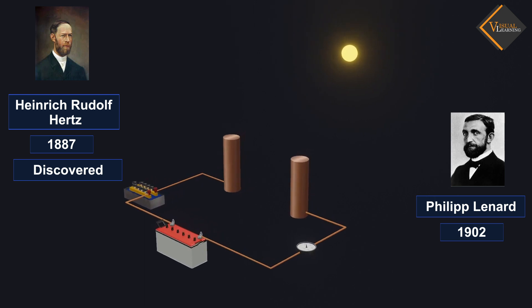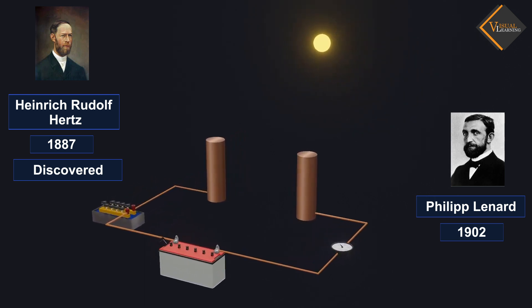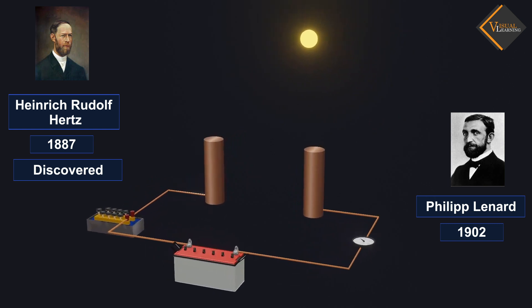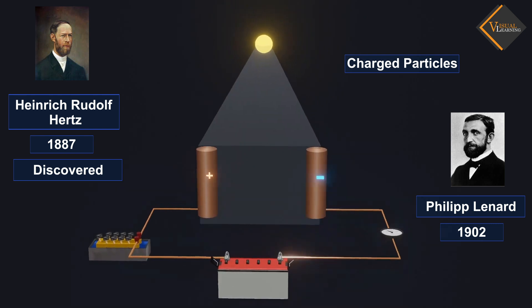In 1902, German physicist Philipp Lenard explained this observation by stating that light falls on the metal surface, liberating charged particles from the metal surface.